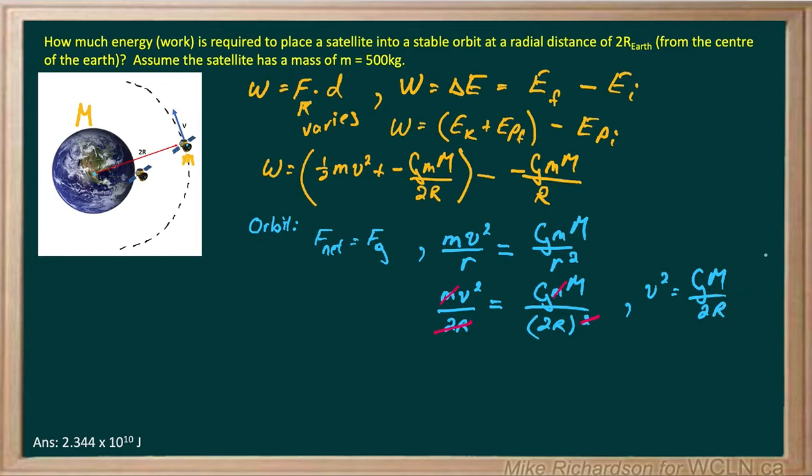Now, I'm going to simply plug this in where I see v squared in my original equation. So my work equation, I'll call it equation 1. Do it over here. Becomes the following. So W equals 1 half M, little m. And v squared, we're going to plug in G M over 2R. So I'll put it in blue just to remind us that it was a substitution.